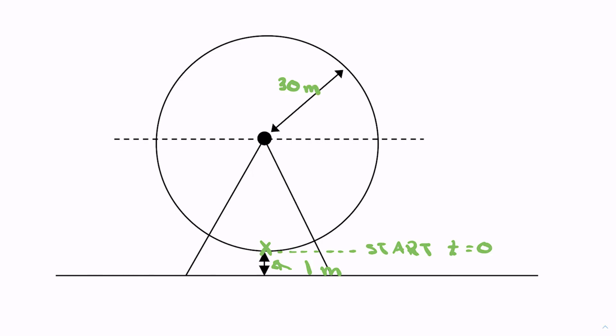You hop on here at the bottom, and we know that one rotation is 80 seconds. One rotation is 80 seconds. You hop on at the bottom and you make one full rotation all the way around in 80 seconds.